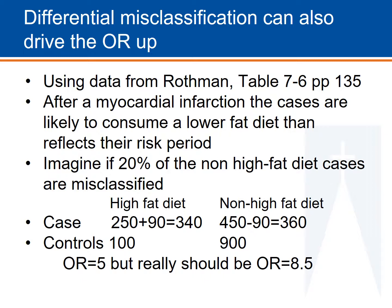This example shows you how you could imagine the misclassification might occur. If you believe the cases are different from controls, think through how they might be different, shift the numbers around, and see what the impact of the misclassification might look like. In this way, you can predict whether the misclassification drives the odds ratio up or down.